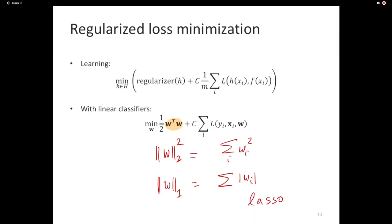When using linear classifiers without a regularizer, there is a preference to overfit. For example, some datasets have dimensionalities in the millions. In million dimensions, if you have only a small number of examples, you might be able to find a linear separator without trying too hard — and that will just be overfitting the data. So you want to impose a preference that they don't try too hard to fit the data.